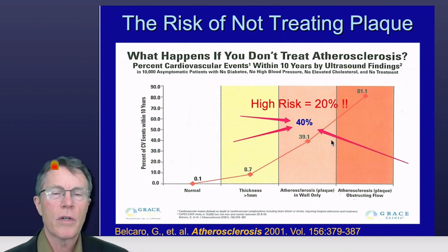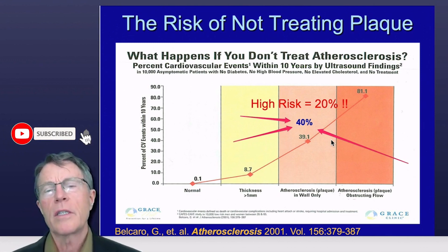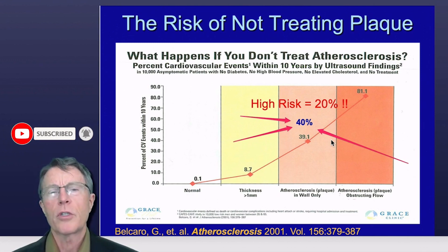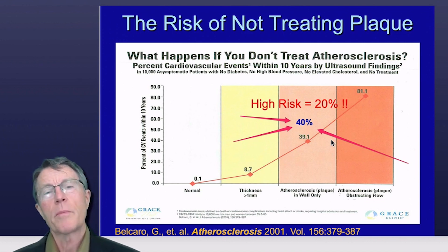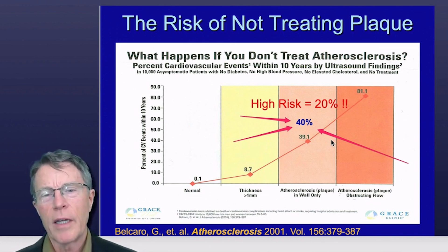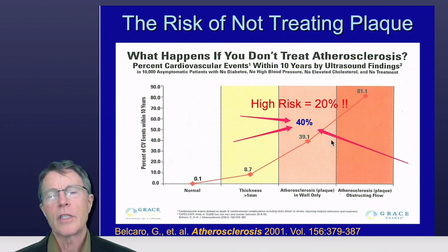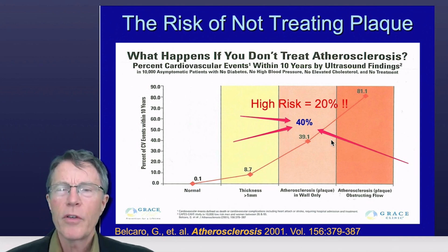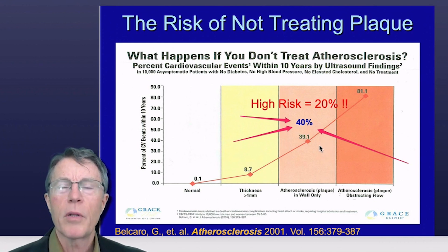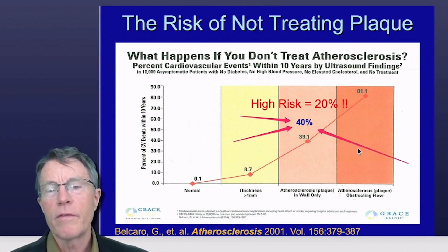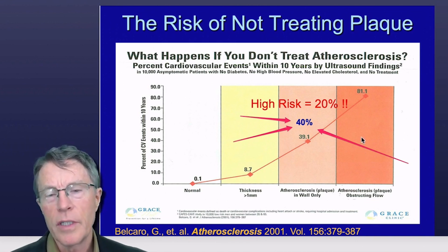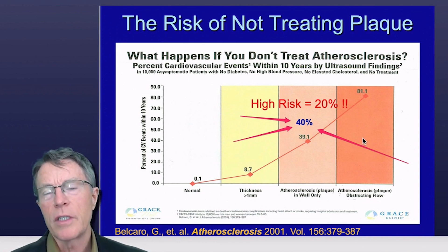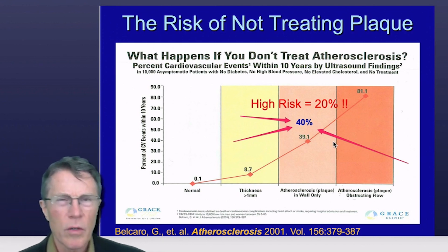All this stuff about absolute versus relative risk really makes a difference if you're low risk — less than 10%. But once you get to 20%, most docs will recommend it. That 20% is based on standard risk factors like Framingham. If you have a plaque that obstructs the flow of the artery, then your risk is 80% over the next 10 years of having an event. That's what you get with a normal carotid ultrasound.